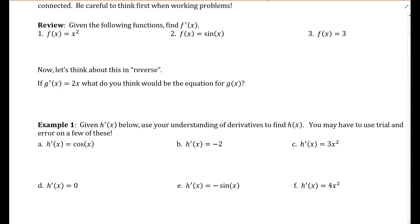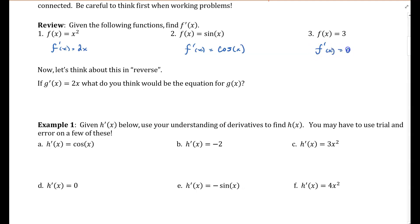If f of x equals x squared, f prime of x is just going to be equal to 2x — that's the simple power rule. f of x equal to sine of x, then f prime of x, the derivative of sine, is cosine of x. And number three, if f of x is 3, the derivative of a constant, we know, is 0.